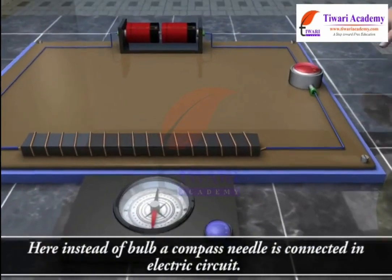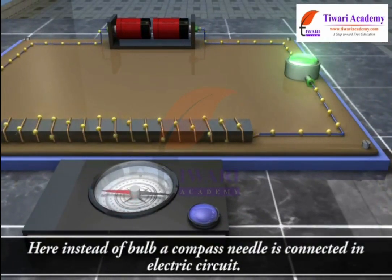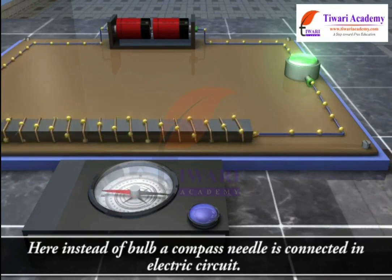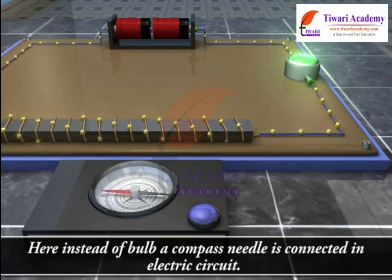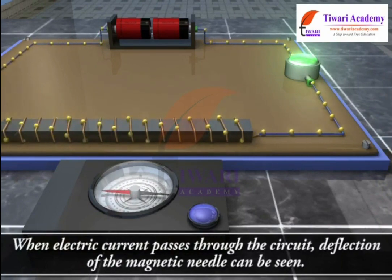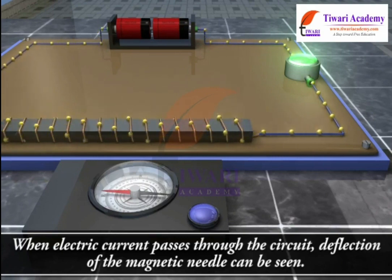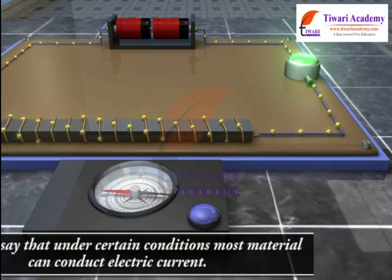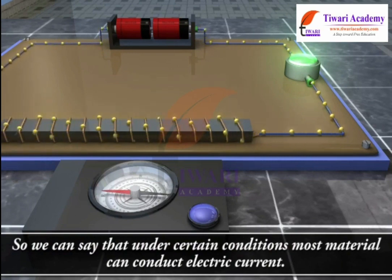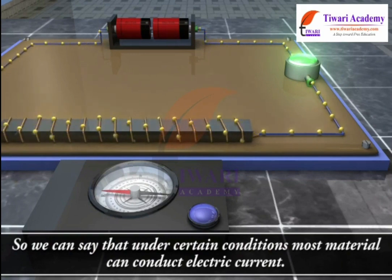Here, instead of a bulb, a compass needle is connected in the electric circuit. When electric current passes through the circuit, deflection of the magnetic needle can be seen. So we can say that under certain circumstances, most materials can conduct electric current.